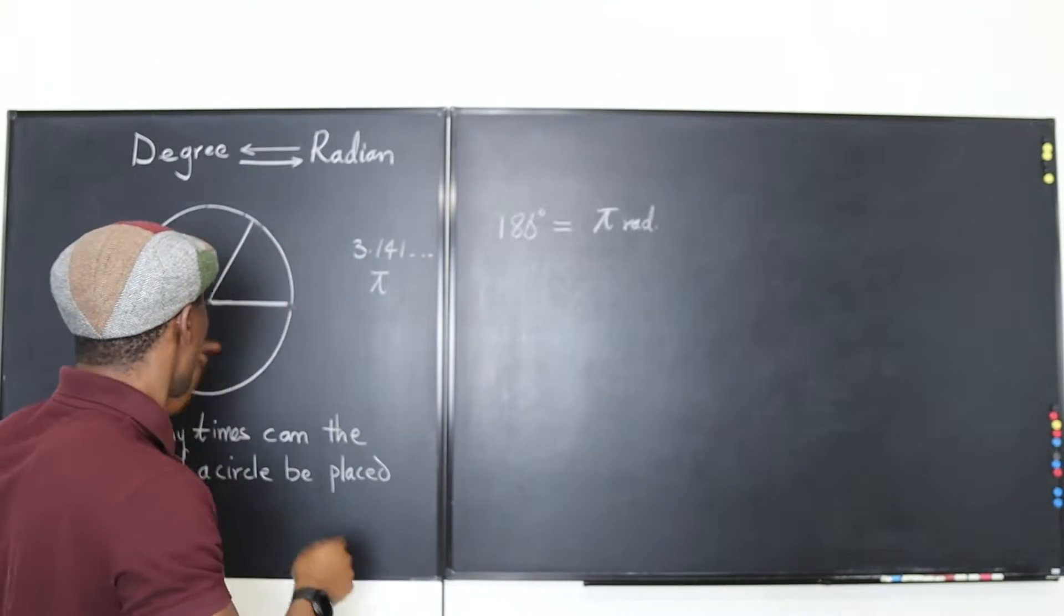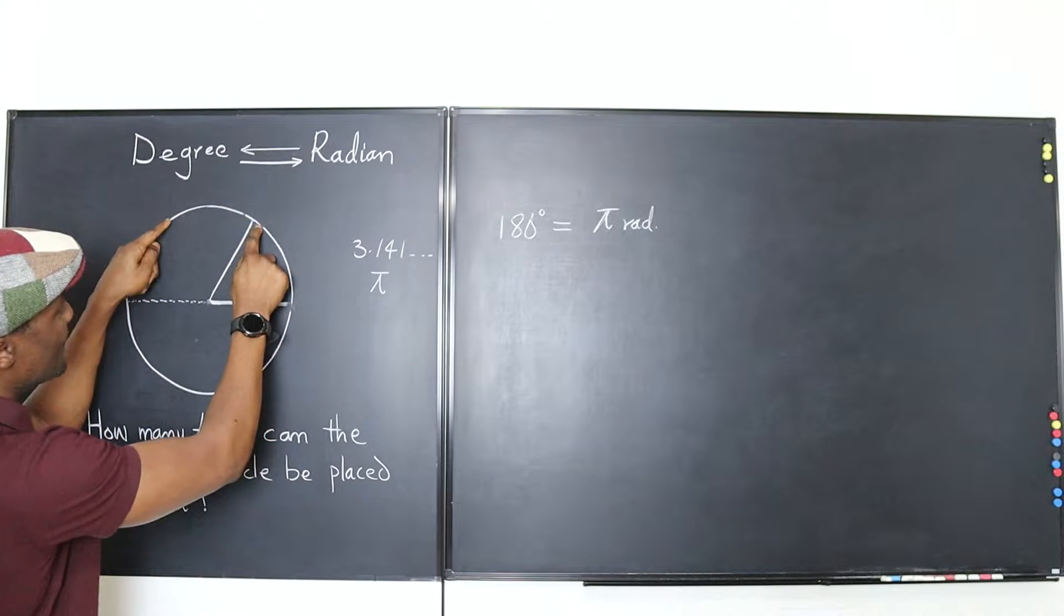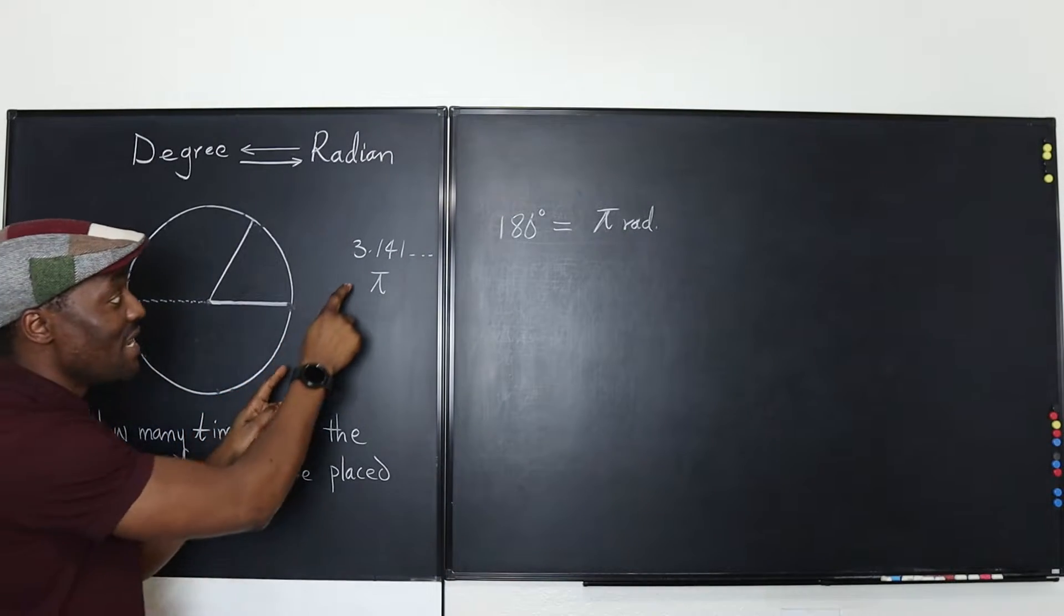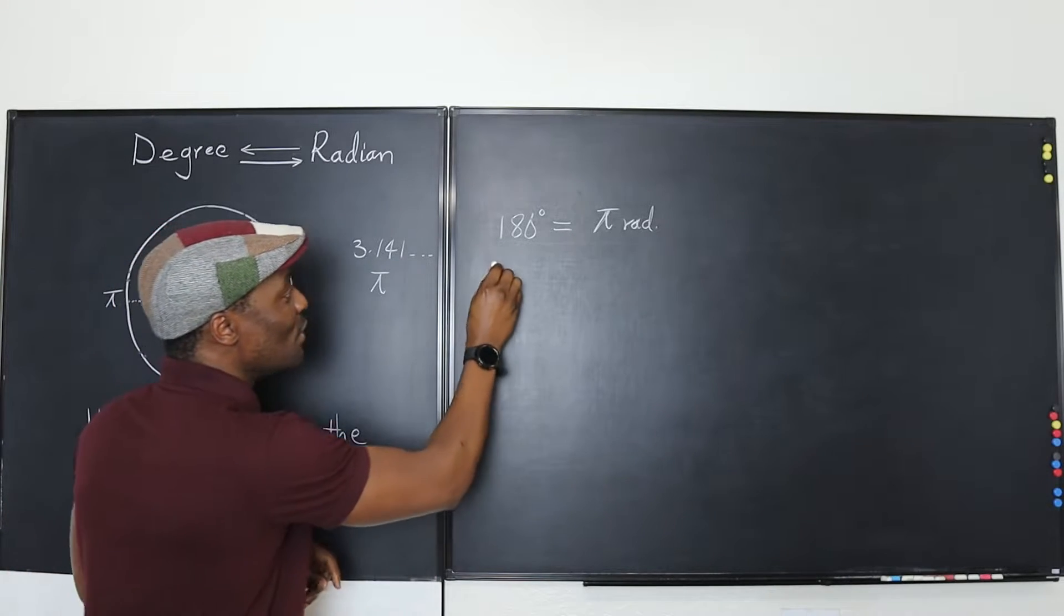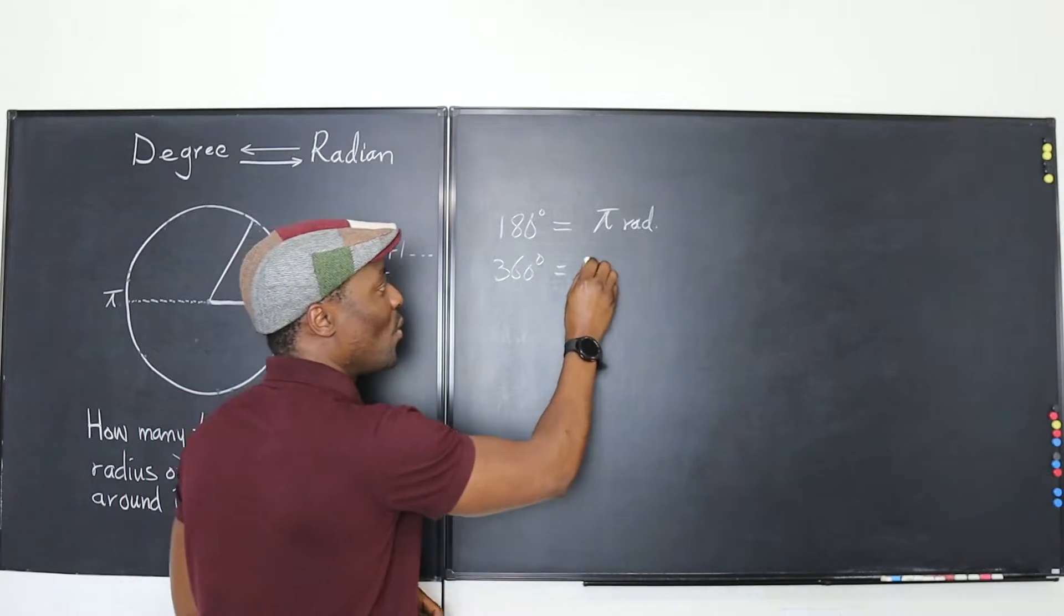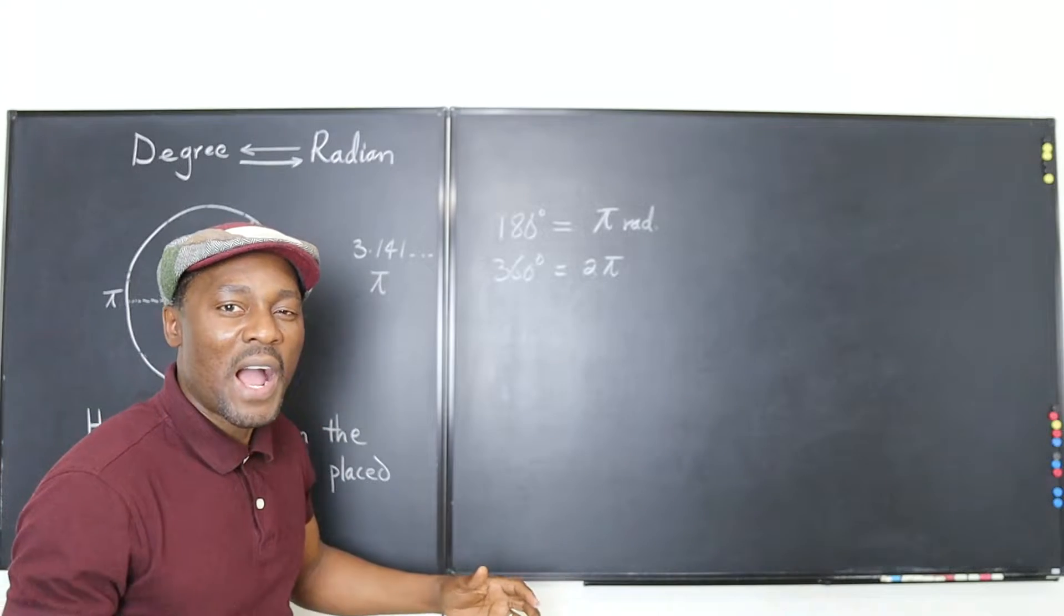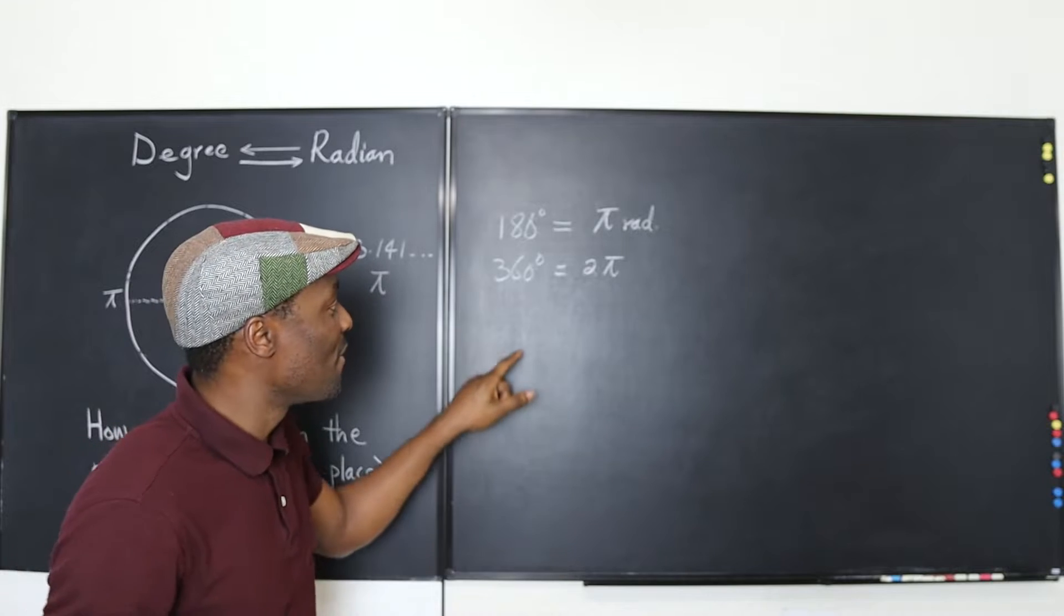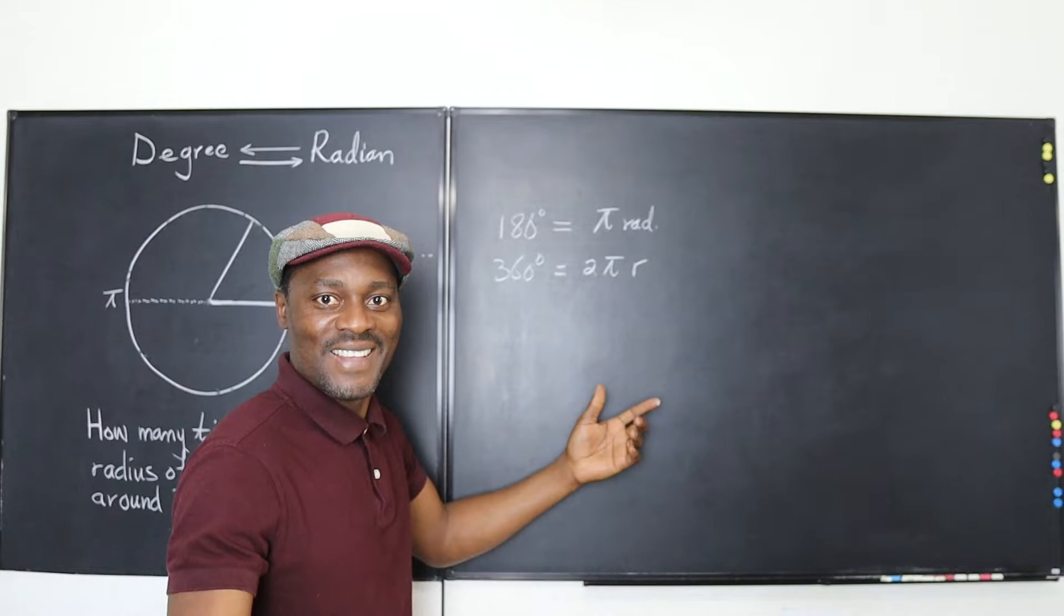And if you do the entire thing it's gonna be slightly more than six. You can place this here six times like that. That's gonna be 6.282 and you keep going like that. So if you do 360 degrees the number of times you can place the radius will be just 2 pi. Where this r is the radius.